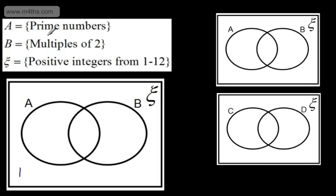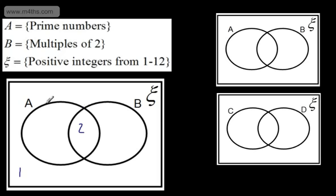Let's now take 2. 2 is a prime number, so it's an element or member of A. And it's also a multiple of 2, so it's a member of B — a member of both A and B. That will go just here in the middle. As we'll see later, we call this the intersection — A intersection B. The larger part around here is A union B. So A or B is the union; A and B is the intersection.